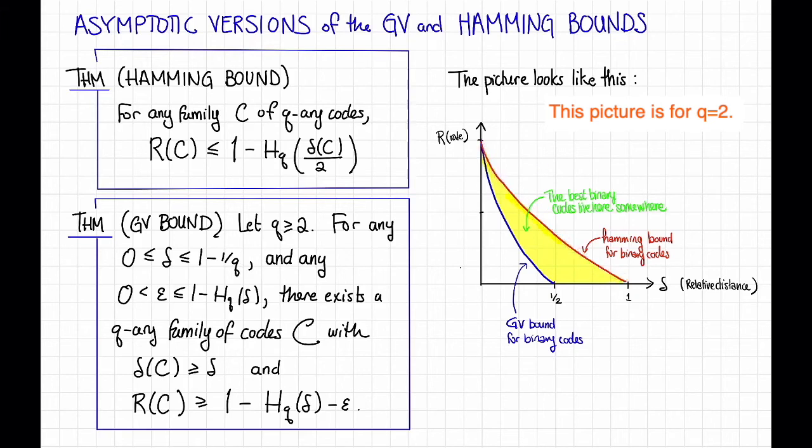If I were to look out here at this particular combination of δ and r, the Hamming bound says there is no code or no family of codes that have that rate and that distance. On the other hand, the Gilbert-Varshamov bound is this blue curve here.